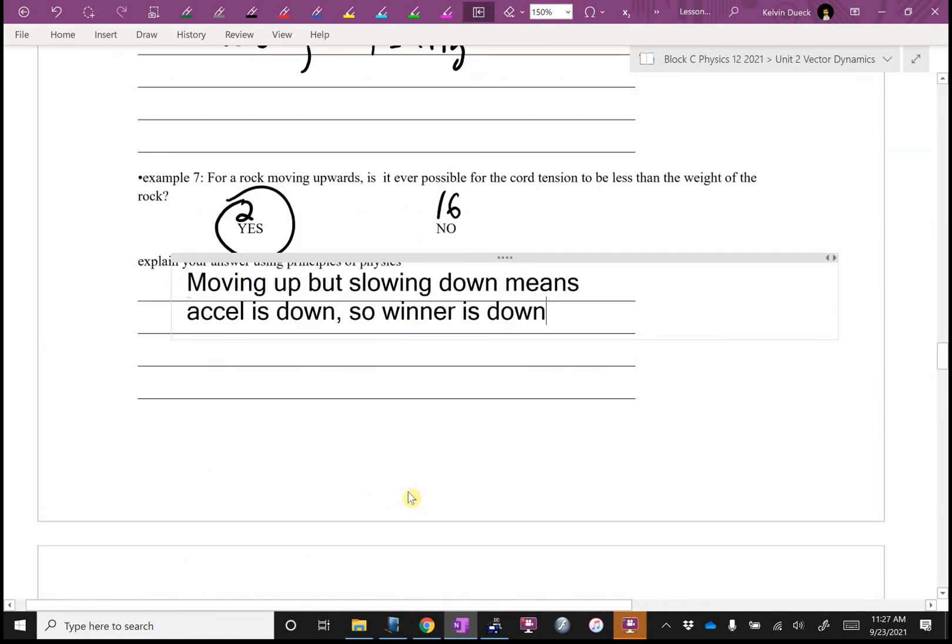If you were in zero G, then it would be impossible because there would be no gravity. But would there be a tension? Well, yeah. You could be constantly accelerating the rope up and apply a tension with no gravity.